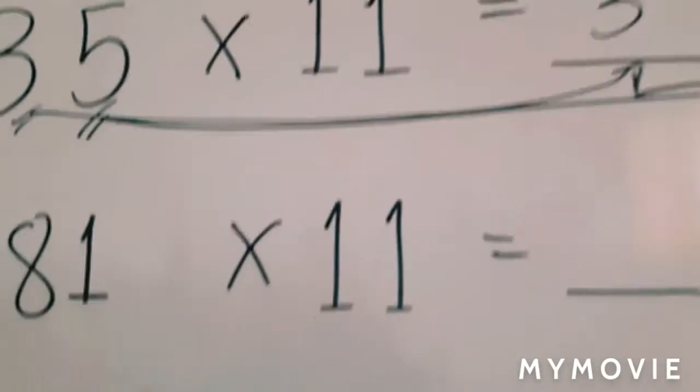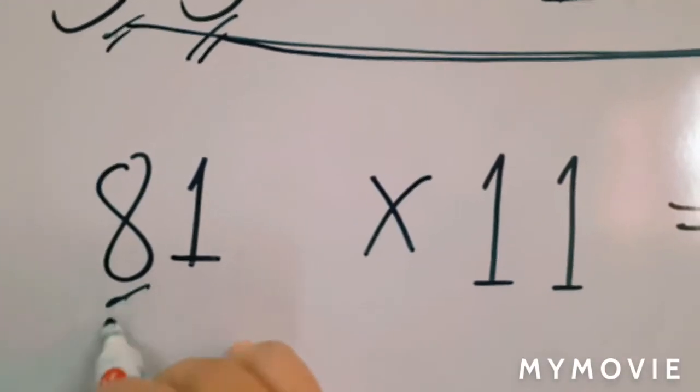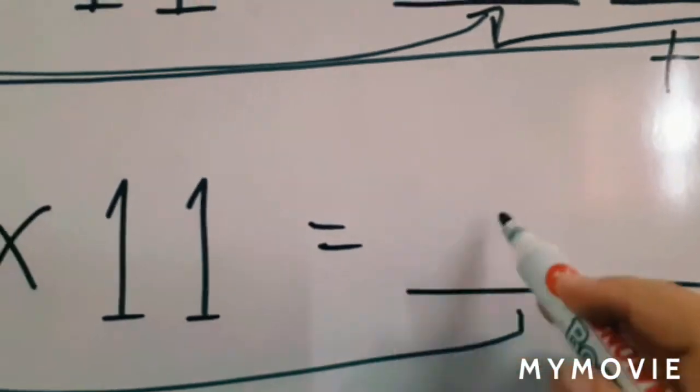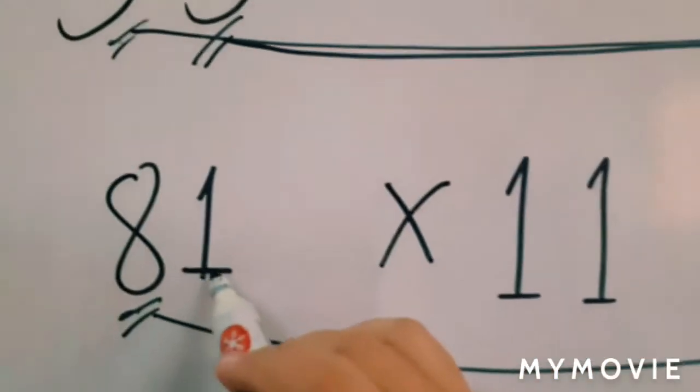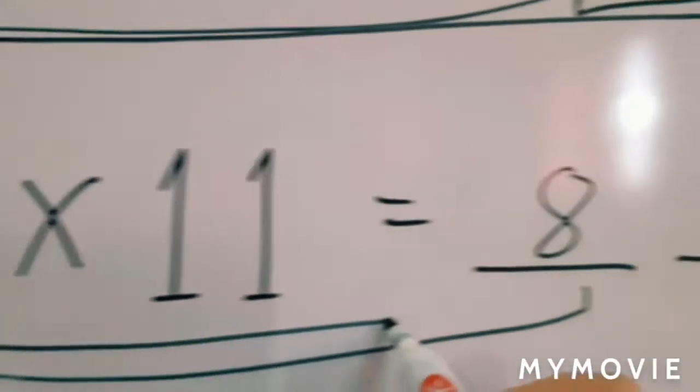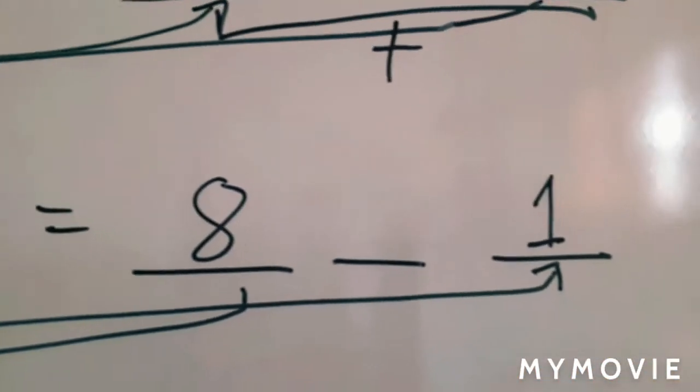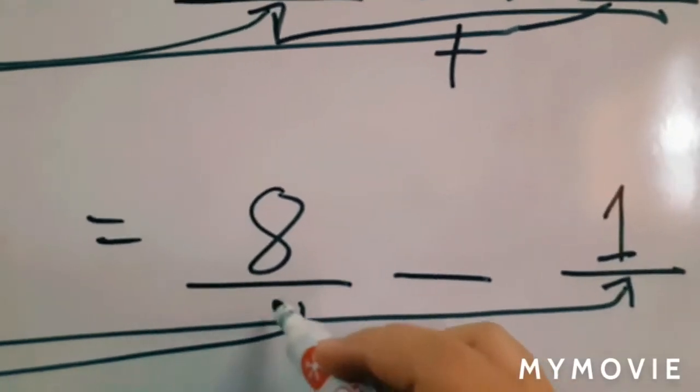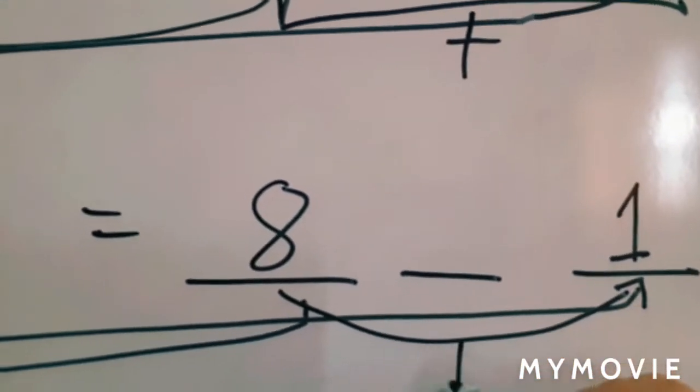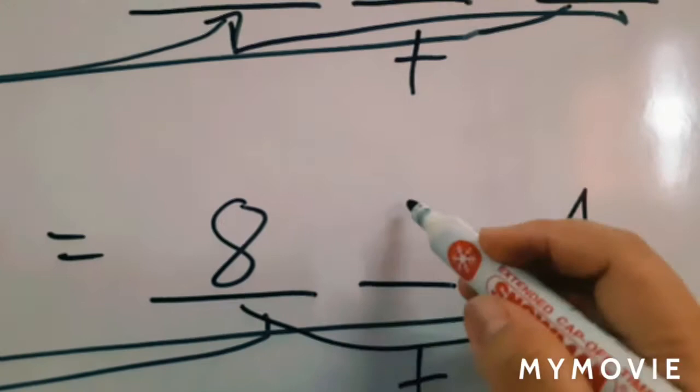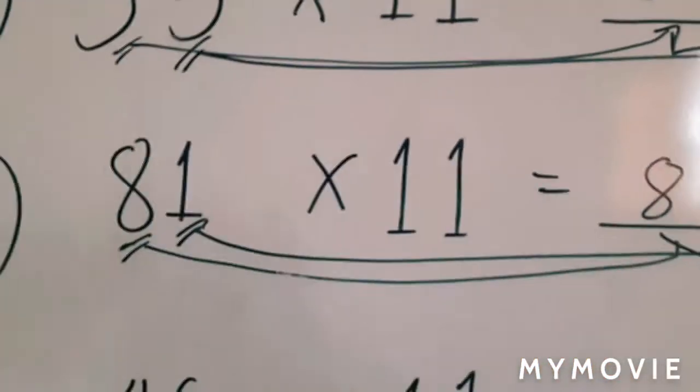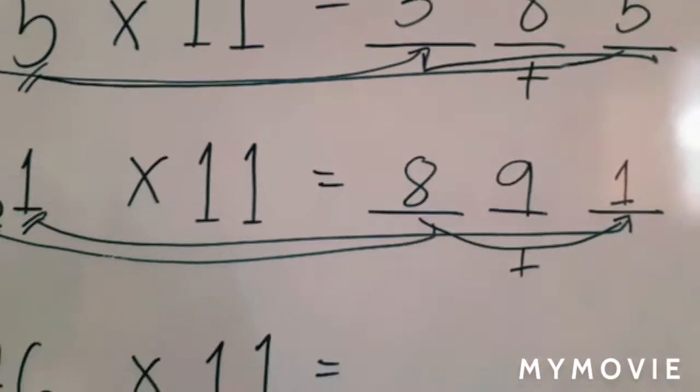Next, 81 times 11. Again, copy 8 as our first digit. Then, the last digit 1, we put on the last digit of our answer, and we simply have to add. 8 plus 1 is 9. Therefore, 81 times 11 is 891.